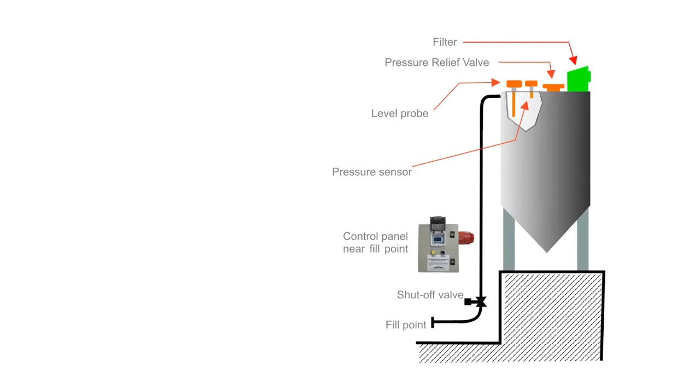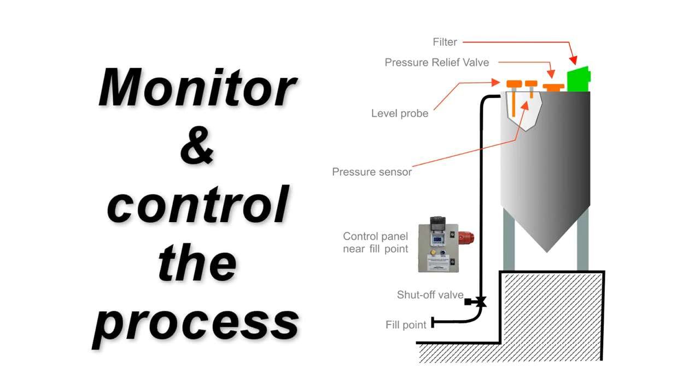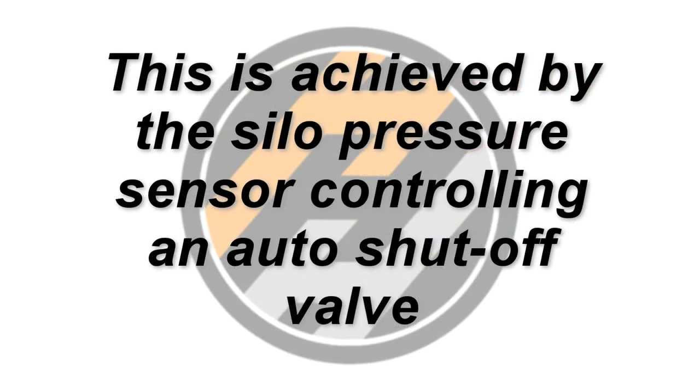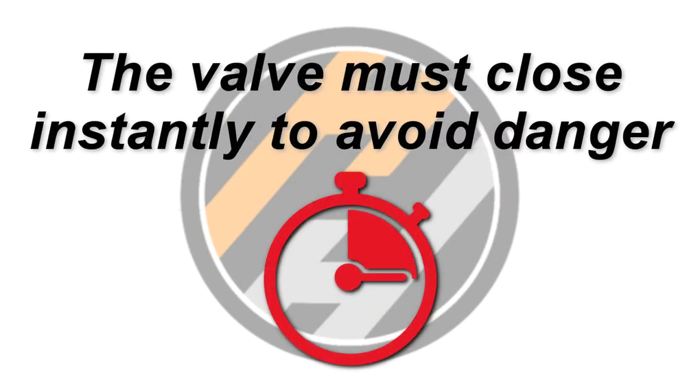The first step in eliminating this risk is to install a silo protection system that monitors and controls the process. The core of this system should be a sensor monitoring the pressure inside the silo, rather than at the fill point. The system must be able to automatically take control and close the inlet valve if the pressure becomes dangerous. This needs to be done automatically as the valve must close instantly.